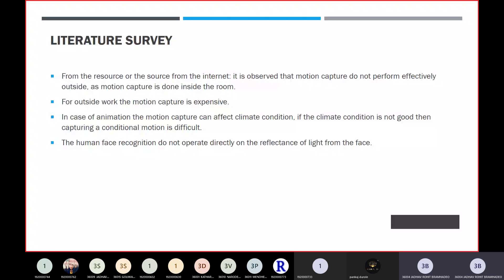If you want to capture motion outside and there is rain, it is hard to capture because some bleaching will occur because of the raining. Human face recognition will not operate directly on the reflection of light from the face. In outside environments, sometimes sun can reflect on the face and it is hard to capture facial expressions. This is what people have pointed out through the literature survey.